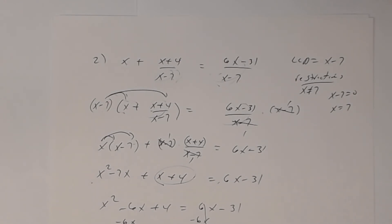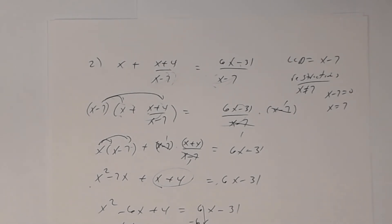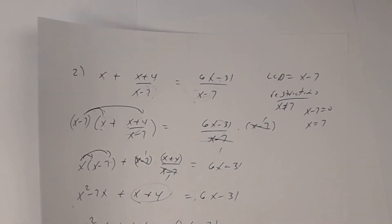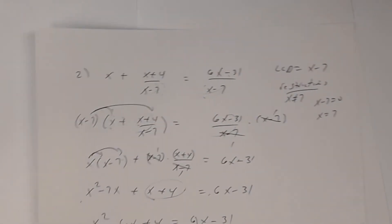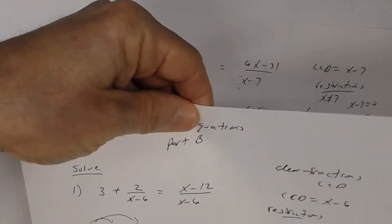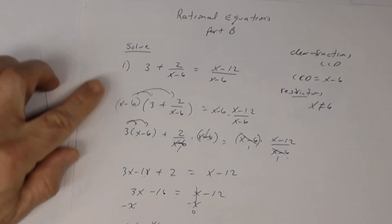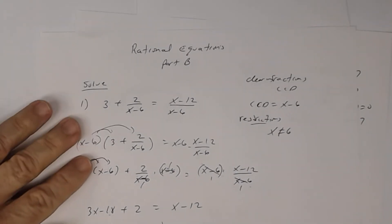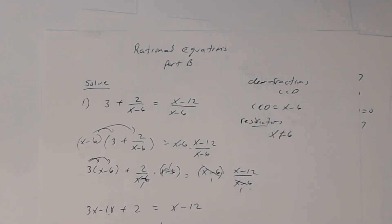So that is how you show the work for Part B. In Part B, this is the work you're going to show — including determining the restrictions and using them to check whether any of your solutions are extraneous. That's going to be the end of these two problems.